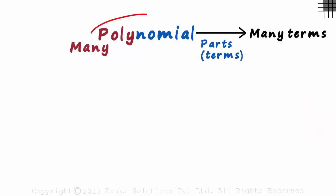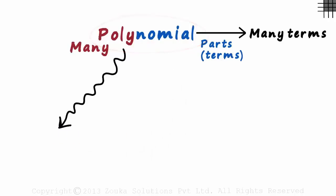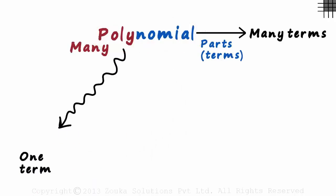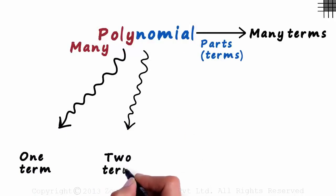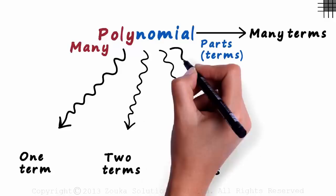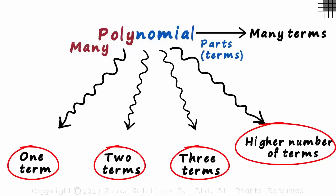There are different types of polynomials. A polynomial can be an expression with just one term or two terms or three terms or maybe even a greater number of terms. All these categories come under one roof, which is the polynomial.